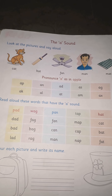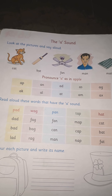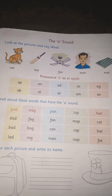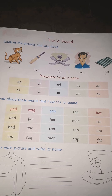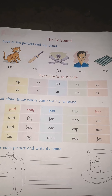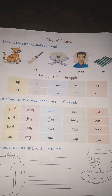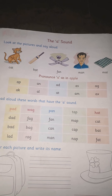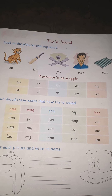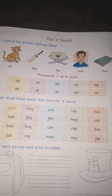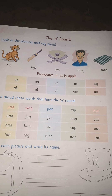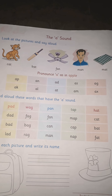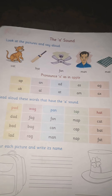Now we are going to learn words related to A. We are calling them A sound words. A sound words — in all letters A is there. That's why we are calling them A sound words. We can read loud by using letters. For example: